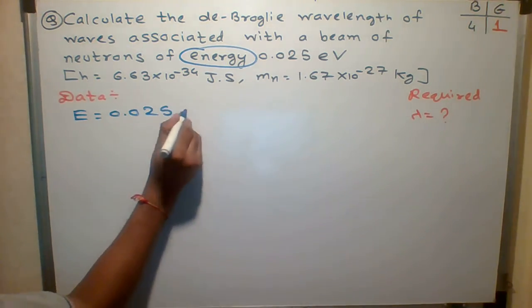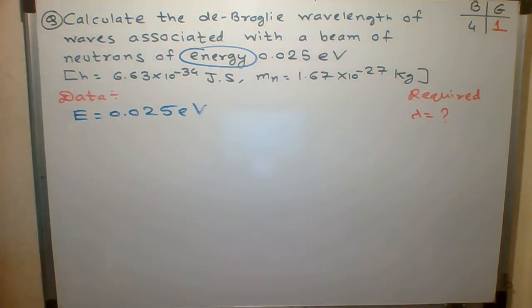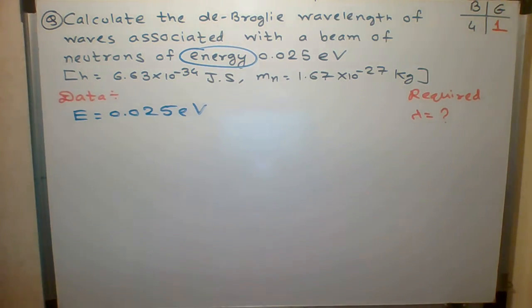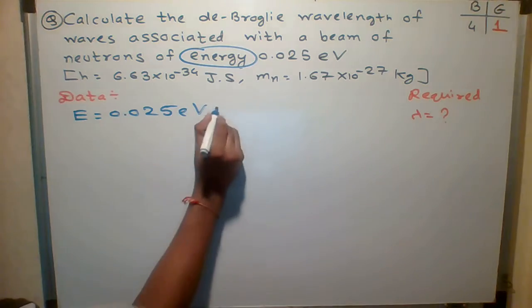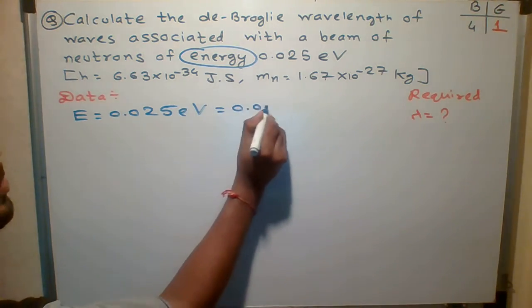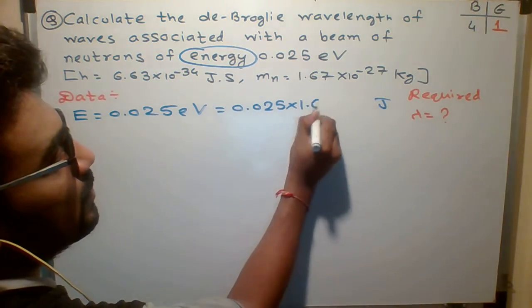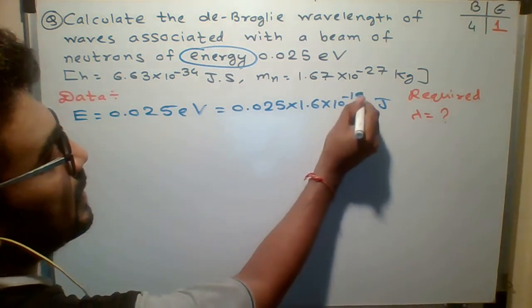0.025. Now Sirti asked me one question: How to convert electron volt into joule? 0.025 - to convert into joule what I will do? Multiply by 1.6 into 10 to the minus 19.